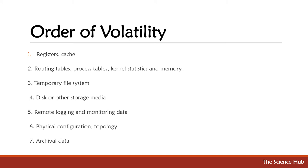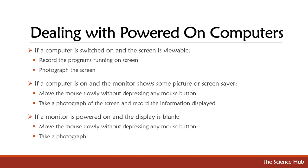The order of volatility: registers, cache, routing tables, process tables, kernel statistics, and memory; temporary file systems, disk or other storage media; remote logging and monitoring data; physical configuration, topology, and archival data. Dealing with powered-on computers: if a computer is switched on and the screen is viewable, record the programs running on the screen and photograph the screen. If the computer is on and the monitor shows a screensaver, move the mouse slowly without depressing any mouse button and take a photograph.